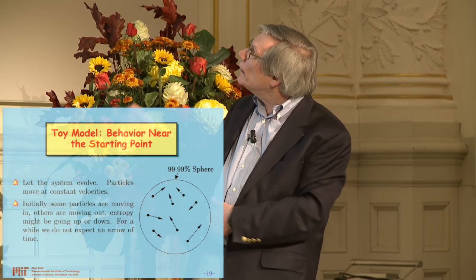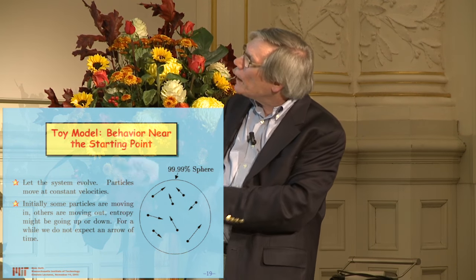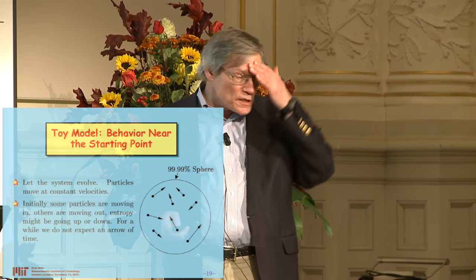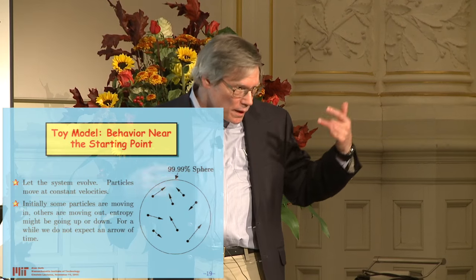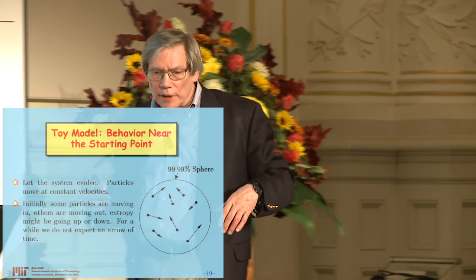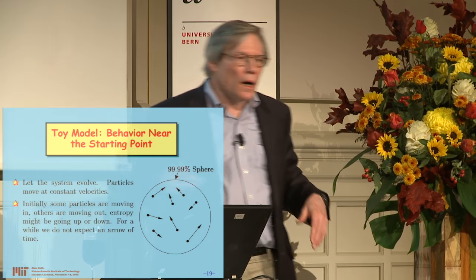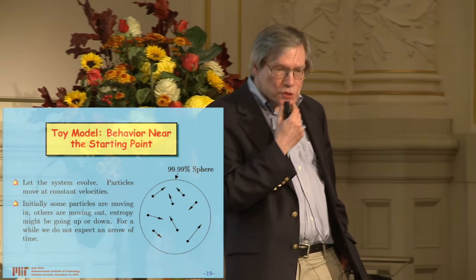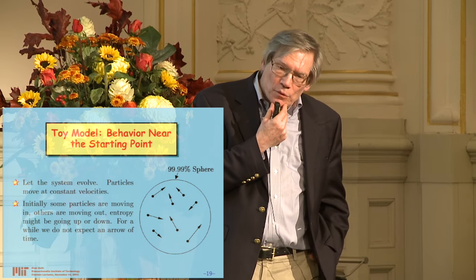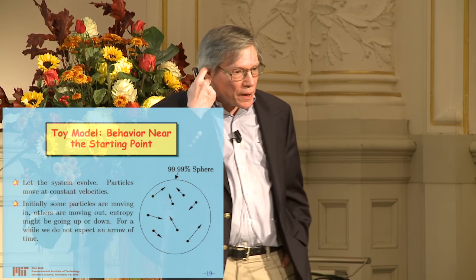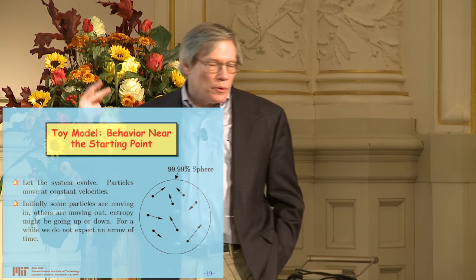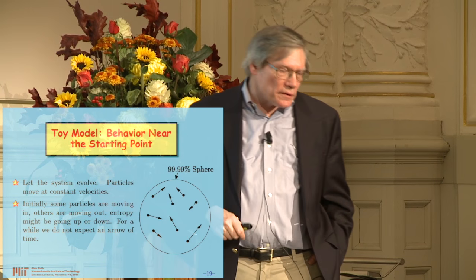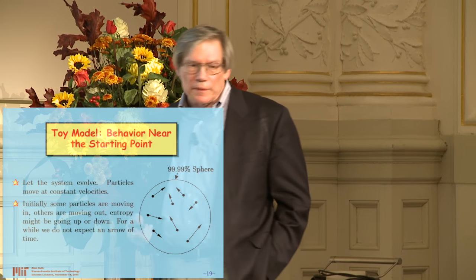Here's my 99.99% sphere. We draw the random particles with random velocities, and initially these particles can be moving every which way — some inward, some outward, pointing every which way — with no significant trend visible in the initial configuration. In fact, the way we generated this initial configuration is by construction statistically the same as what we would get if we reversed all the velocities. So it is a time reversal invariant statistical distribution.